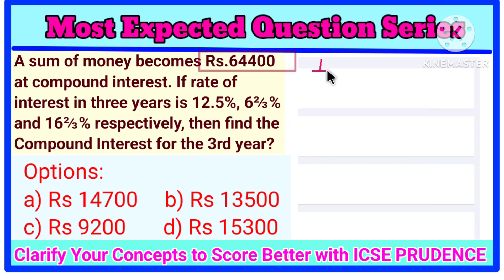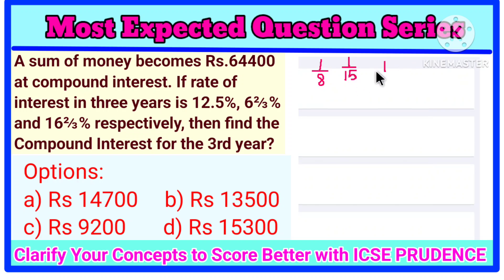We know the fraction value of 12.5% is 1/8. 6⅔% is 1/15. And the fraction value of 16⅔% is 1/6.